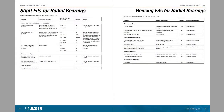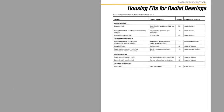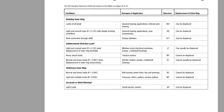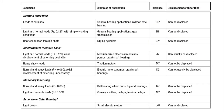The fit between the shaft and inner diameter of the bearing is only half of the equation. We will also need to ensure a proper fit between the outer diameter of the bearing and the housing in which it will be installed. To find this information, flip back to page 49, where we see the housing fit selection table. There are several options here, so we need to be sure to select the correct conditions.